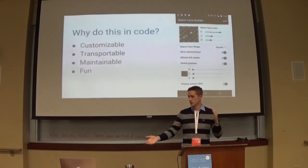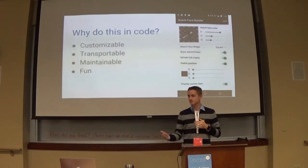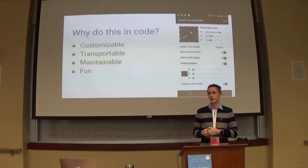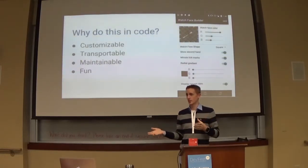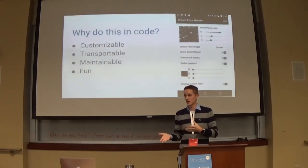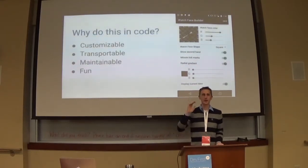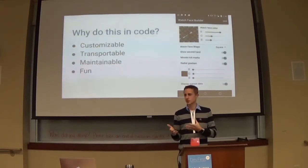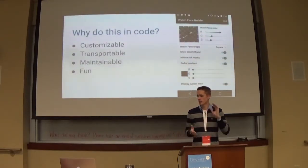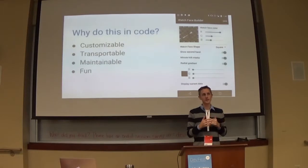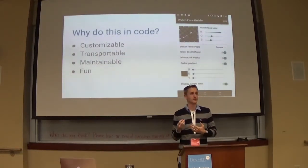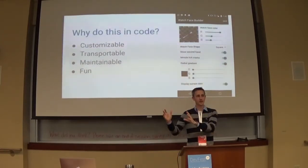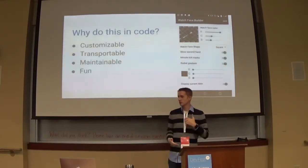One thing I don't like about the Google code supplied for building analog and digital watch faces is that they kind of lump everything into one class. While this may be okay for a basic tutorial, putting all that code in onDraw makes it very hard to customize and maintain long-term. By moving all of that code out to its own canvas drawing and paint classes, you can start to create some really fun stuff.